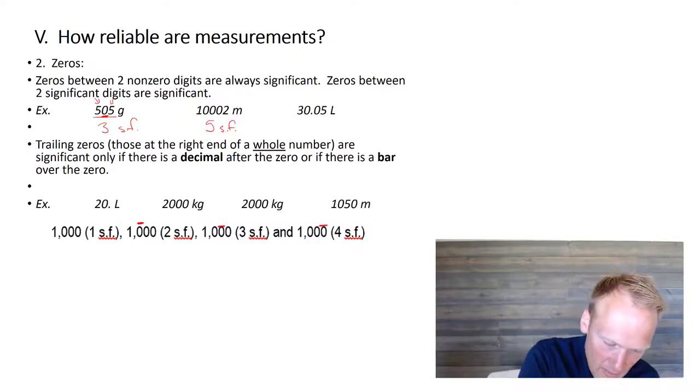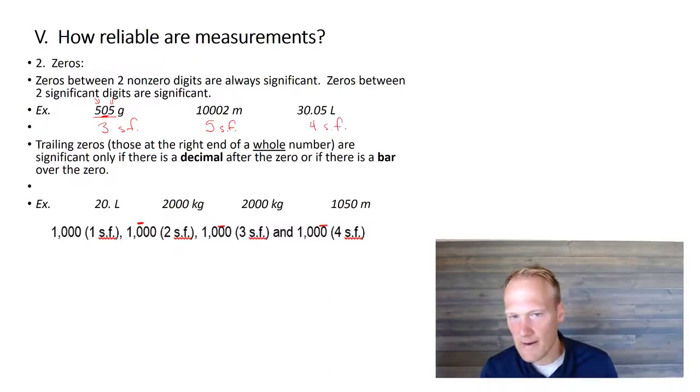All right. If the zero is trapped, it's significant. The next issue would be trailing zeros. In other words, if a zero is on the end of a number.